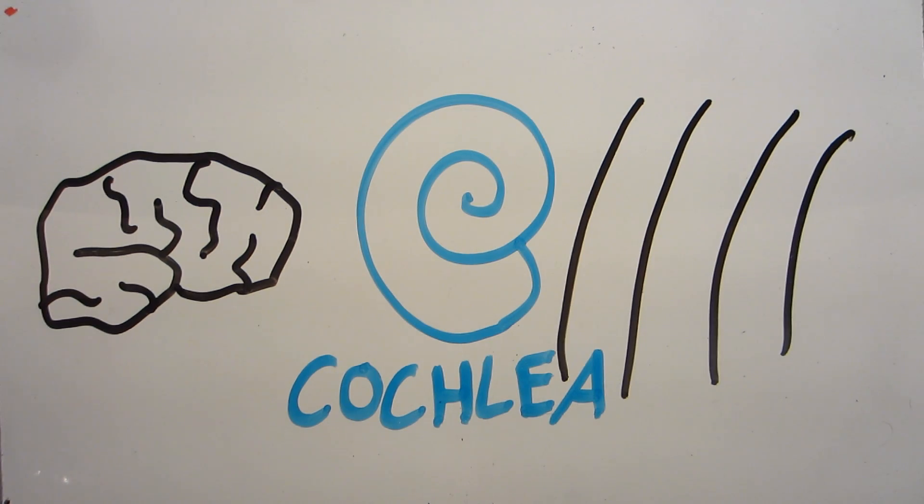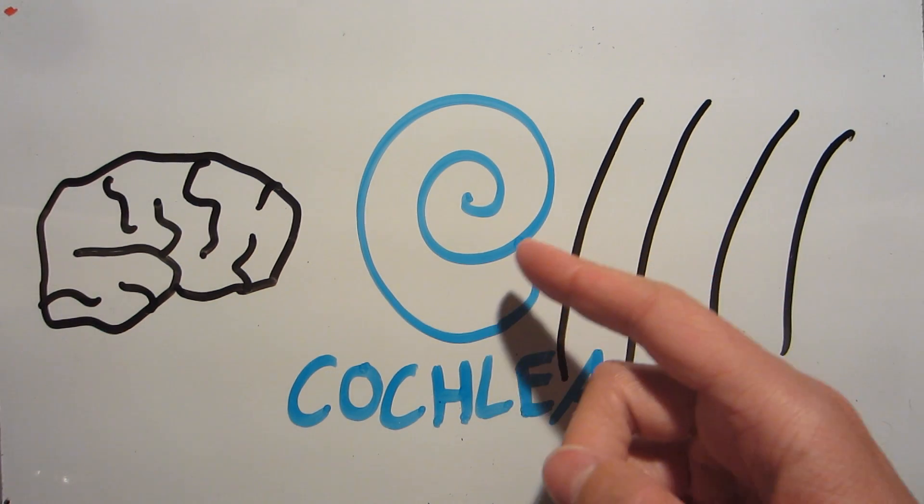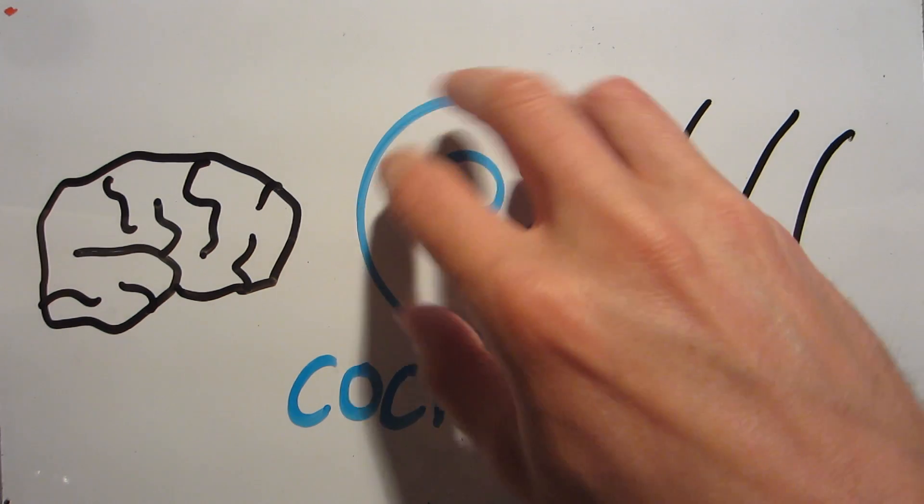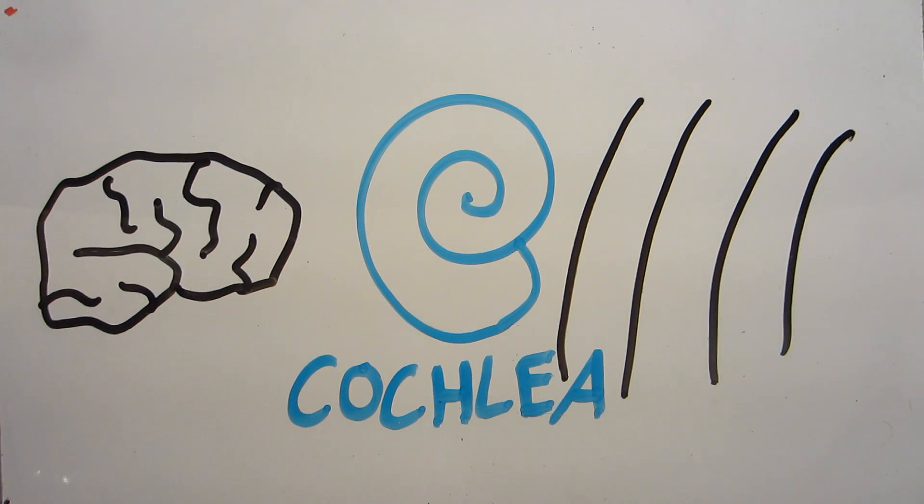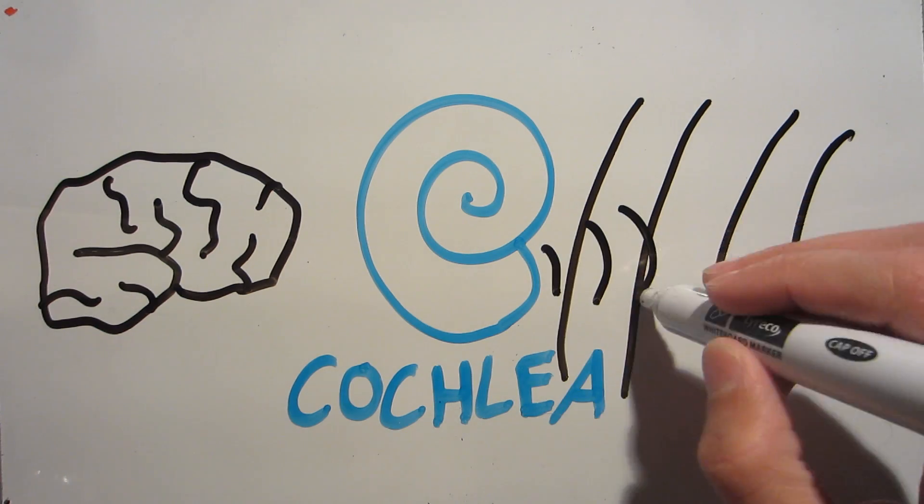The ear has a problem, though. The pressure waves it wants to detect in the air aren't actually strong enough to activate the fluid in the cochlea. It takes more energy to start the fluid moving than air. So if the waves ran straight up against the cochlea, they would mostly bounce off.